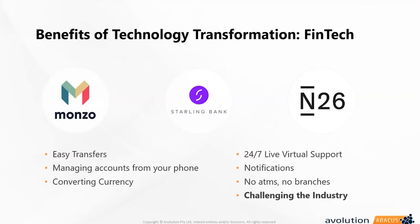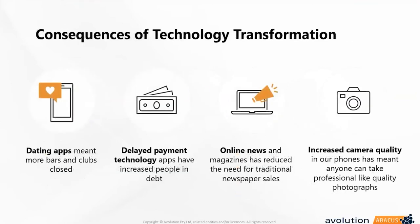The benefits sometimes blind us to the consequences, which can spread across various industries. One example is dating apps — while many felt they could connect with like-minded people, the consequences fell on pubs, bars, clubs, and restaurants that used to hold social events and have had to close because of that technology transformation.